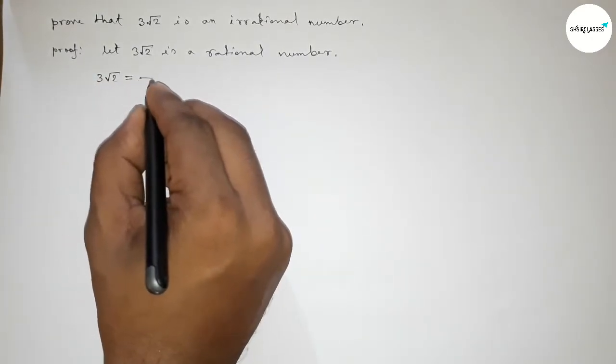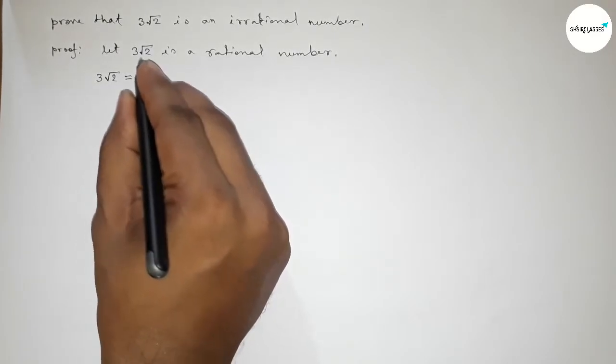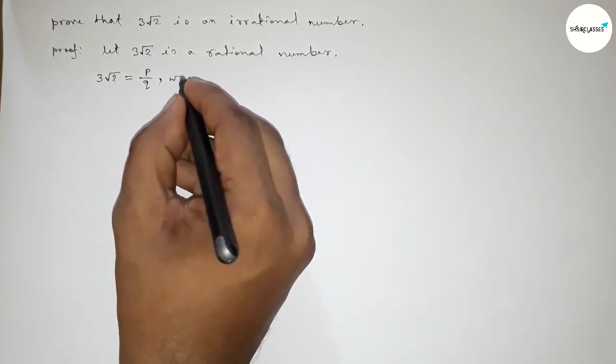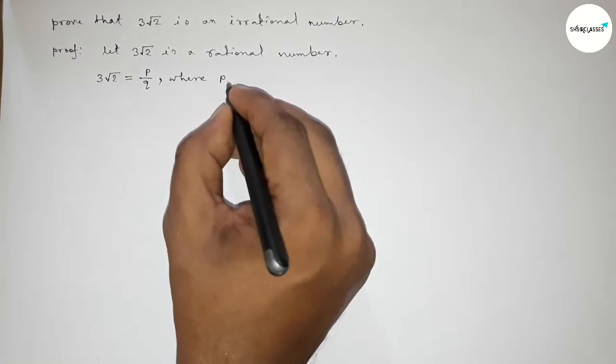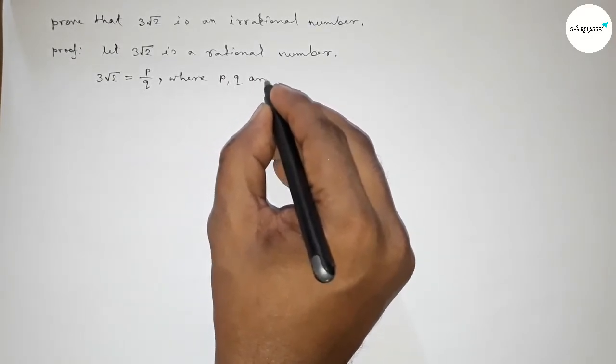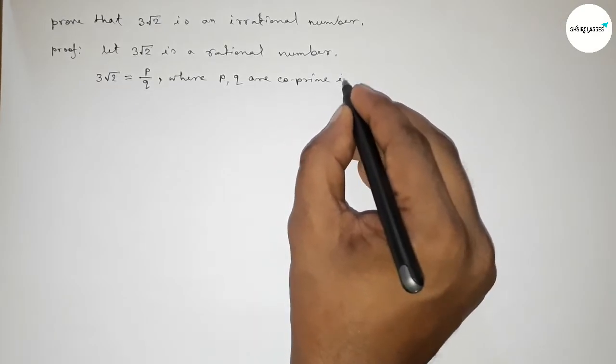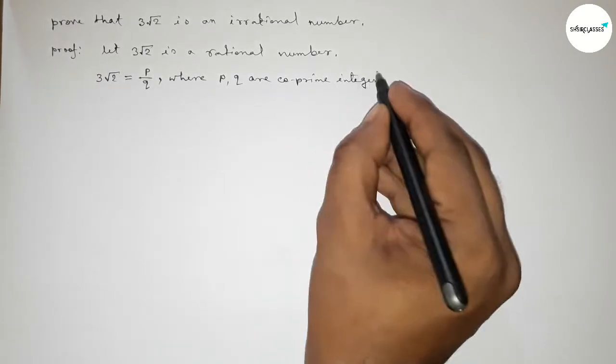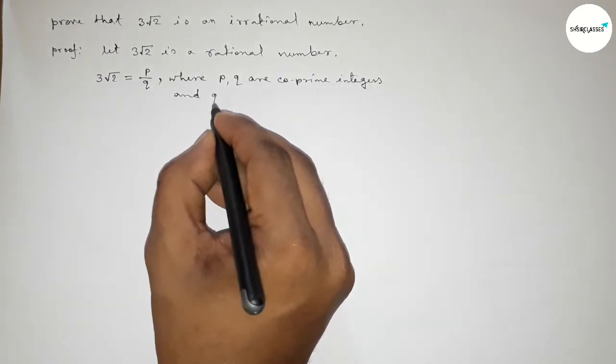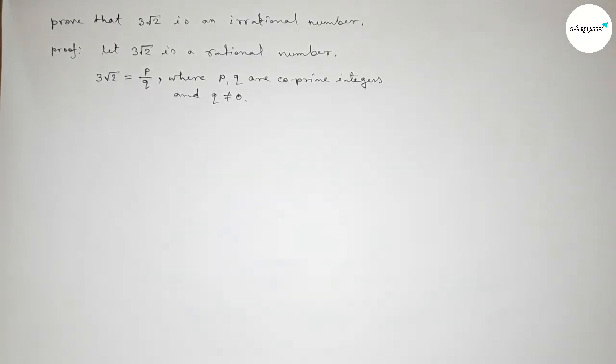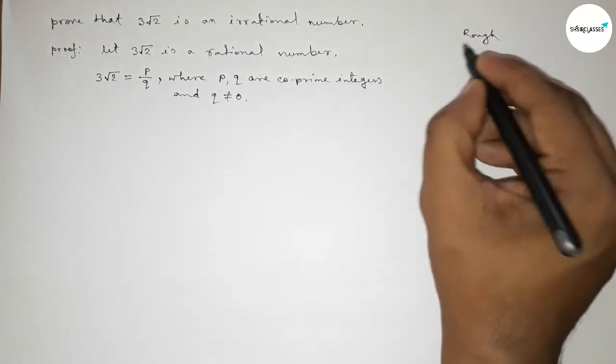So where p, q are coprime integers. That means p, q have only one common divisor and the common divisor is 1, and q can never be zero.